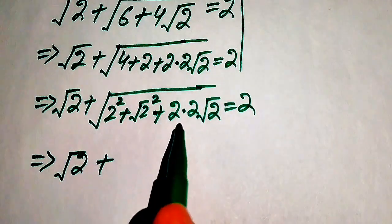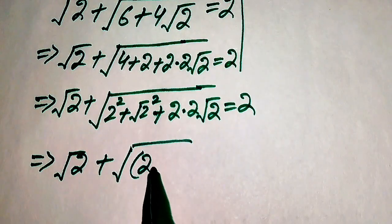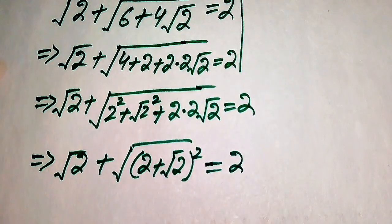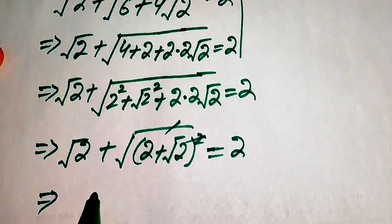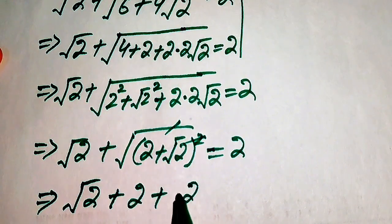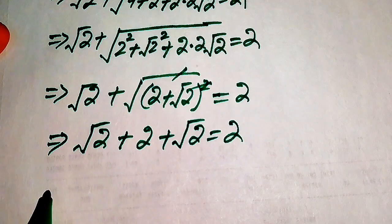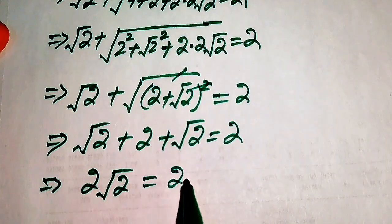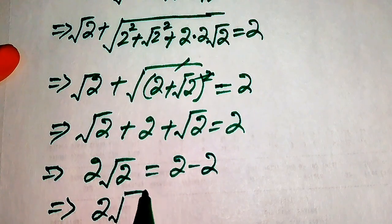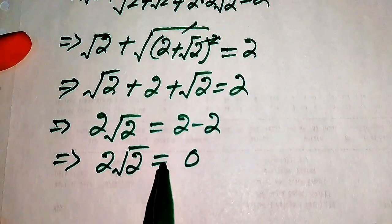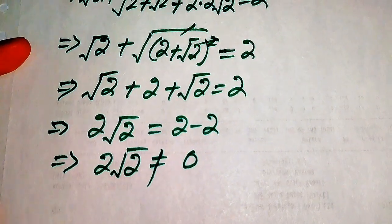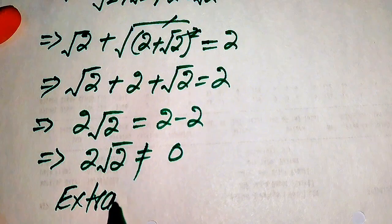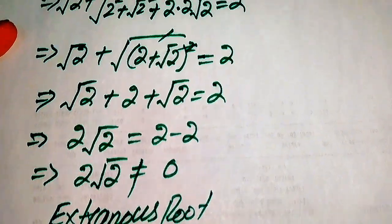Inside the square root we recognize the perfect square (2 plus √2)², so √(2 plus √2)² equals 2 plus √2. The equation becomes √2 plus 2 plus √2 equals 2, which gives 2√2 plus 2 equals 2, or 2√2 equals 0. Both sides are not equal, so the first value C equals 6 plus 4√2 does not satisfy the original equation. This is an extraneous root.